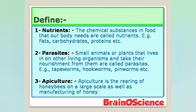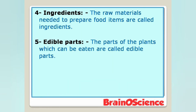Number three is Apiculture. Apiculture is the rearing of honeybees on a large scale as well as the manufacturing of honey. Ki agar hum madhu makkhiyon ko, yani honeybees ko large scale pe palte hain aur unka honey bhi manufacture karte hain, to us kaam ko apiculture kehte hain.